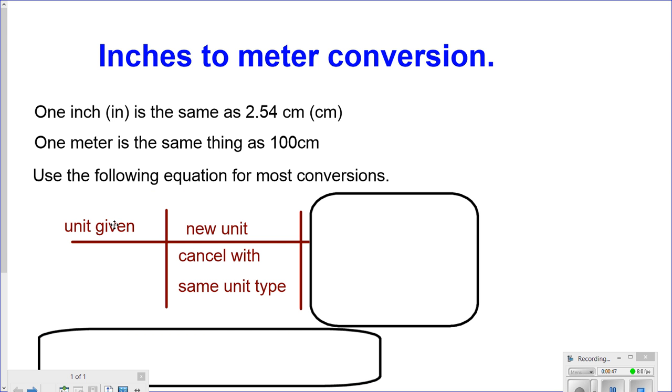Given unit, cancel the same type of unit, and we go to the new unit that we want to look for. In this case, however, we're going to another step, and we cancel this unit by itself at the bottom, and we go to the newer unit.